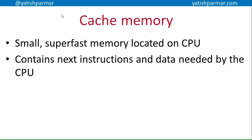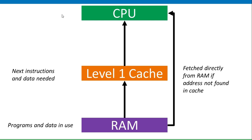So basically, you've got your RAM, you've got your CPU, and in between it you've got your cache. The cache contains the next data and instructions that are needed, whereas the RAM contains all the programs and data that's currently in use. The CPU will check with the cache to see if the data and instructions it needs are in the cache. If they're not there, it will have to fetch directly from the RAM. You can see where some things might go wrong: if the stuff the CPU needs is not in the cache, it's going to have to go to the RAM and therefore the whole process will slow down.